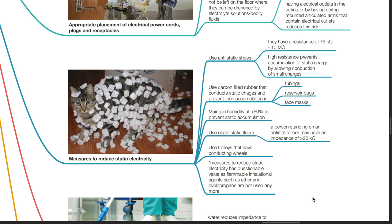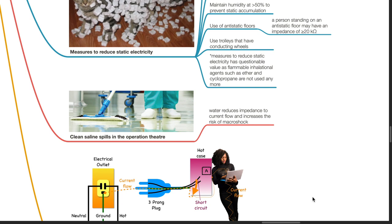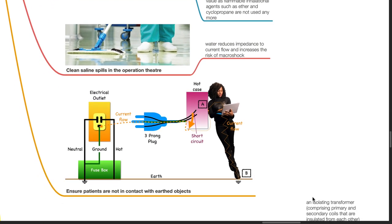Measures to reduce static electricity have questionable value as flammable inhalational agents such as ether and cyclopropane are no longer used in modern operation theaters. These measures include use of anti-static shoes with resistance of 75,000 to 10 megaohms that prevent accumulation of static charge, use of carbon-filled rubber in tubings, reservoir bags and face masks, maintaining humidity above 50%, use of anti-static floors with impedance over 20,000 ohms, and use of trolleys with conducting wheels. Clean saline spills in the operation theater as water reduces impedance to current flow and increases the risk of macroshock. Ensure patients are not in contact with earth objects.